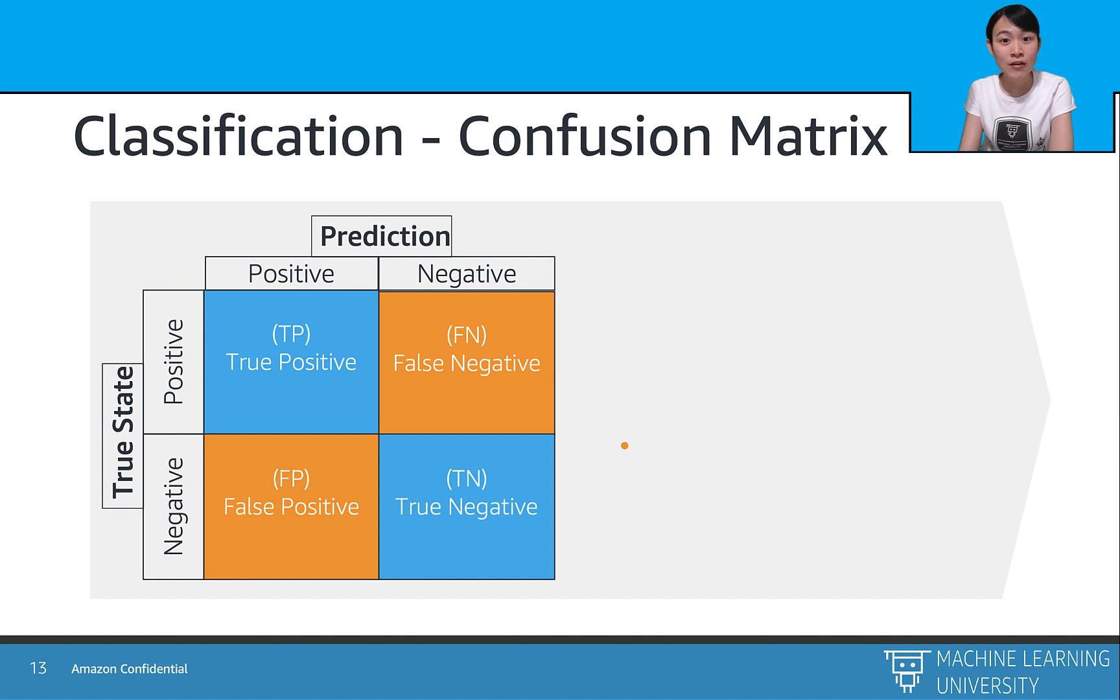For the false negative, or FN, predicted negative when the actual truth is positive. And last but not least, the true negative predicted negative when the actual truth is negative.